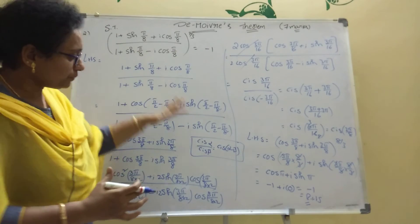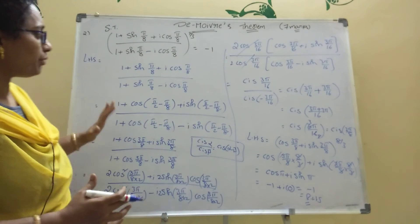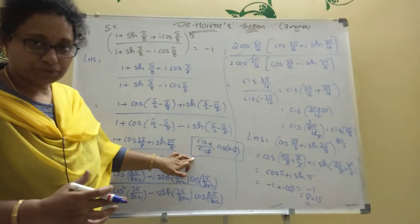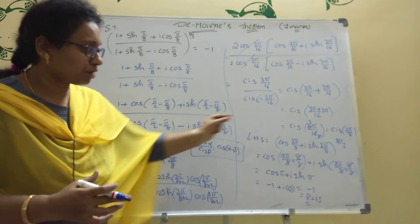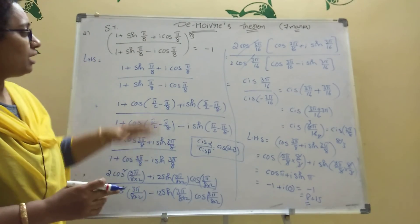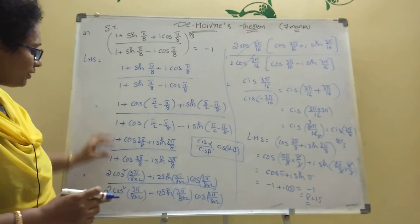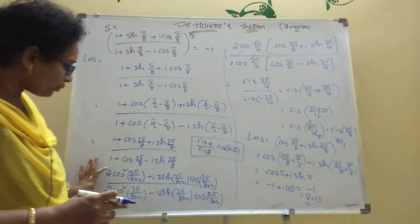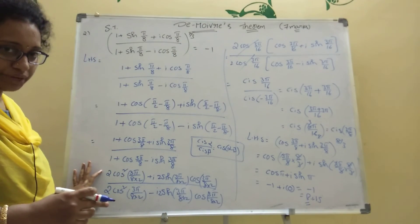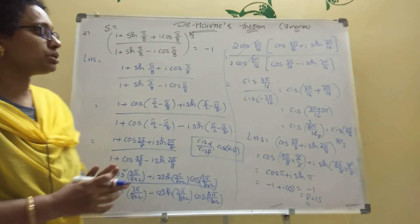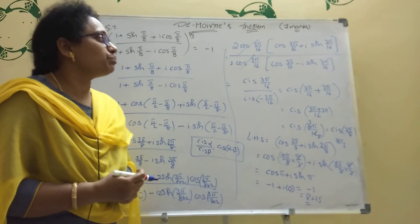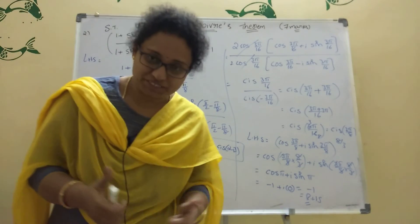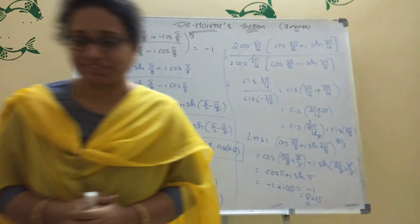That is proved: the answer is −1, which is the RHS. The key formula used was cis(α)/cis(β) = cis(α−β), and taking 2cos(θ/2) as a common factor. These two sums are very important — 14 marks total. Thank you for watching my channel, please subscribe and share.